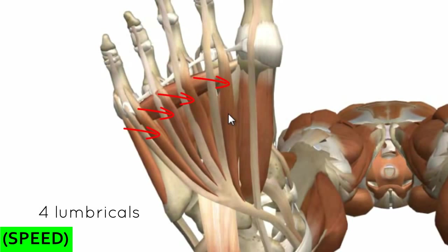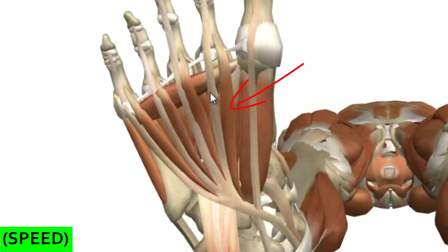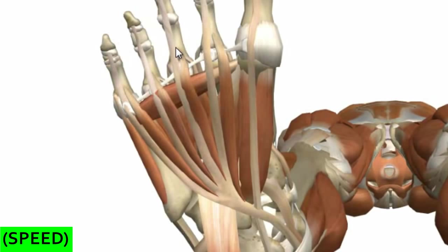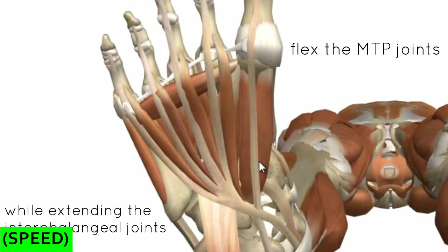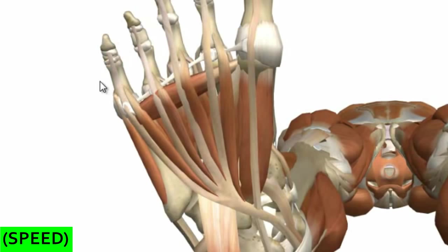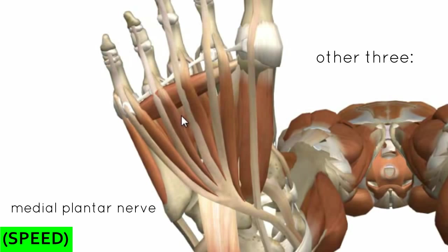Next, we've got the four lumbrical muscles. Just like in the hand, the lumbricals originate from the sides of the flexor digitorum longus tendon - analogous to the flexor digitorum profundus in the hand. The first lumbrical originates from the medial side of the tendon to the second toe with one origin, whereas the other three originate from adjacent sides - they are bipennate muscles with two sets of fibres converging onto a central tendon. They insert onto the extensor hood of the lateral four digits, allowing them to flex the MTP joint while extending the interphalangeal joints. The first lumbrical is innervated by the medial plantar nerve; the other three are innervated by the lateral plantar nerve.